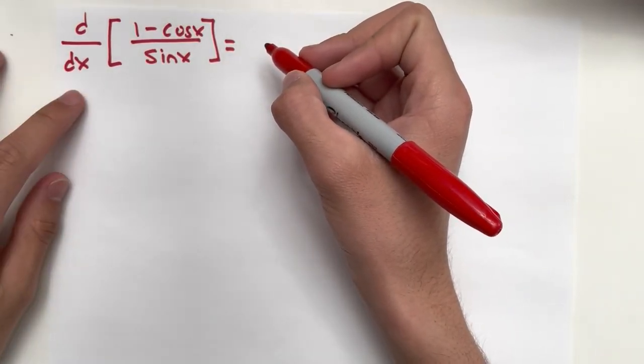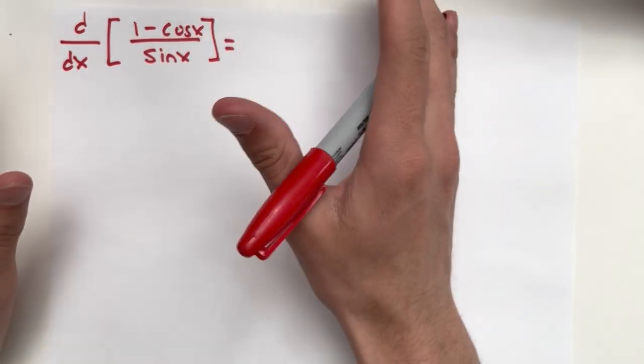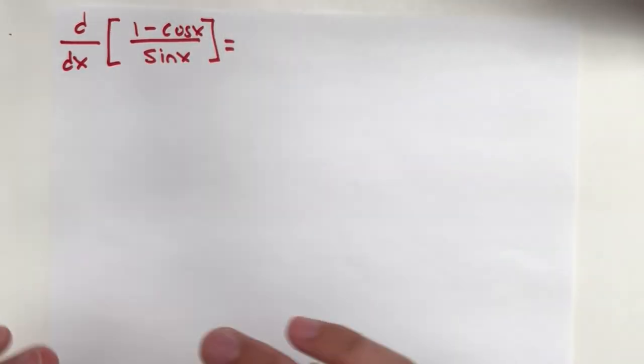The derivative of 1 minus cosine x over sine x. So when we look at this, again, we may be tempted to use the quotient rule, but don't be fooled.